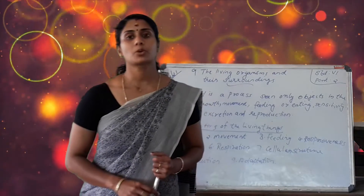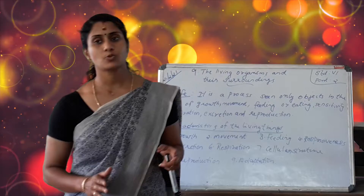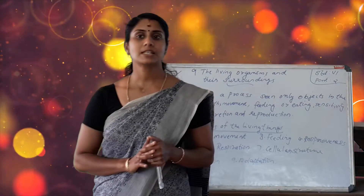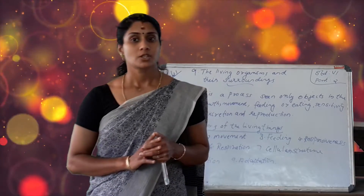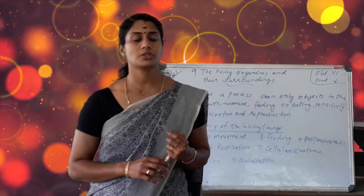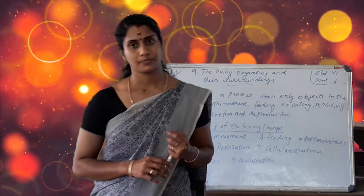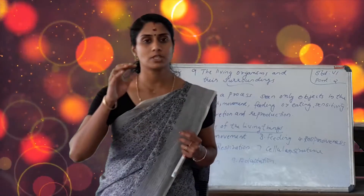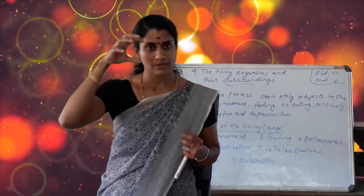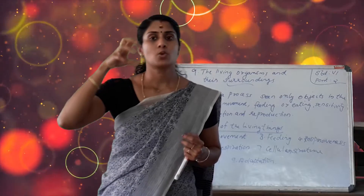Desert plants have a well-developed root system. The stem is succulent and spongy, which helps in the storage of water. It is also green and performs photosynthesis. The stem is spongy to help regulate temperature and water can be absorbed.